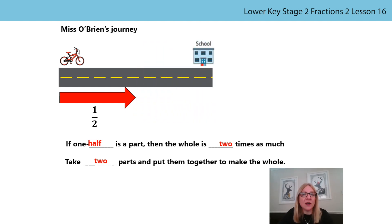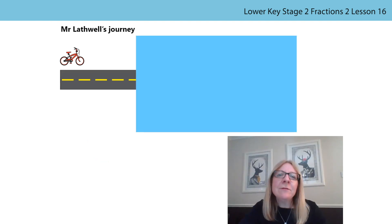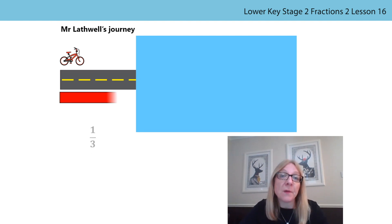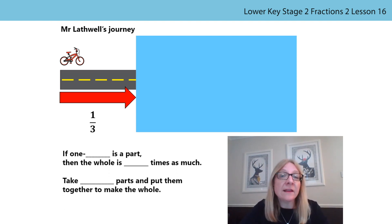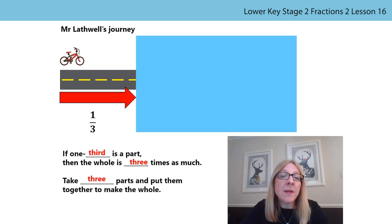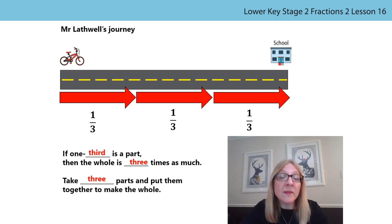Now we can see the whole of Miss O'Brien's journey. Do you think Mr Lathwell's journey will be longer, shorter, or the same? Now let's try to visualize Mr Lathwell's journey to school. We know that this is one third of Mr Lathwell's journey. Let's use our stem sentence: if one third is a part, then the whole is three times as much. Take three parts and put them together to make the whole. Now we can see the whole of Mr Lathwell's journey.